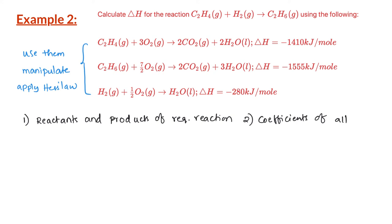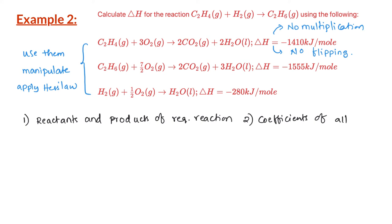C₂H₄ is one of the reactants of the required reaction. In the list of given reactions, the only reaction that has C₂H₄ is reaction 1, and it is on the reactant side of reaction 1. We want C₂H₄ to be on the reactant side, so we can use reaction 1 without flipping or reversing. Also, the coefficient of C₂H₄ in the required reaction is 1, and the coefficient in the given reaction is also 1, so we can use reaction 1 without multiplying.